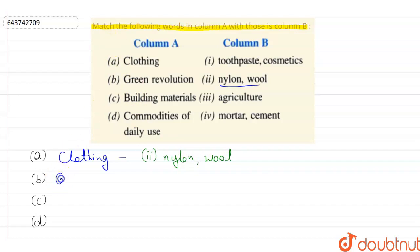The second one is green revolution. The green revolution is the third revolution in the field of agriculture. So our option will be third.